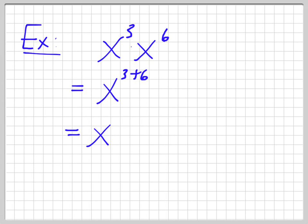So you may even see it with variables, something like this: x to the 3 times x to the 6, so it's no different. x to the 3 plus 6 is x to the 9. So you reduce it down to one base and you add the exponents.